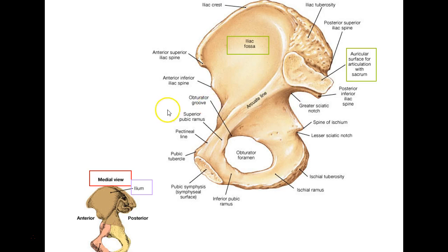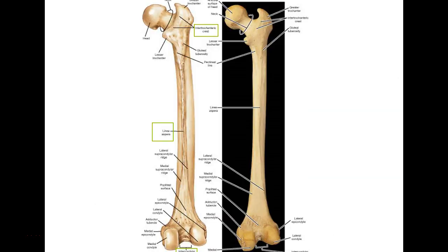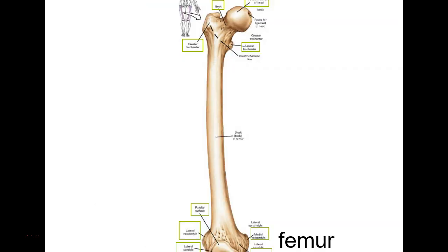On a lab test these can be identified by letters A, B, C, D. Lecture questions might ask you to name differences between a male and female pelvis, or what three bones fuse to make a coxal bone — also called the os coxa.